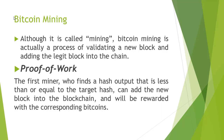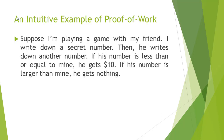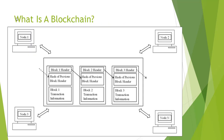Let me give you a very intuitive example. Suppose I'm playing a game with my friend. I write down a secret number on a paper and he writes down a number as well. Then we open our numbers. If his number is less than or equal to mine, he gets $10 as a reward; if his number is larger than mine, he gets nothing. This is a showcase of the basic idea of proof of work. In the blockchain network, if I want to add a new block into a Bitcoin blockchain, I have to give a hash code to the new block, then compare this hash code with the hash code of the previous block. My new block will only be added into the blockchain if the hash code of the new block is less than or equal to the hash code in the previous block.